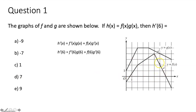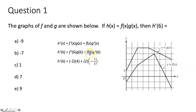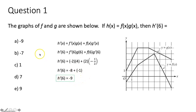At x equals six, the slope of our f function: we go down two, right one, down two, right one — so that's a slope of negative two. We plug in negative two for f prime of six. g of six is just the y-value of our g function at x equals six, which is four. f of six is the y-value of our f function at x equals six, which is two. And g prime of six is the slope of our g function at x equals six — going down one, right two — so that's negative one half. Simplifying: negative two times four is negative eight, two times negative one half is negative one, and adding gives negative nine. So h prime of six equals negative nine, and A is your answer.